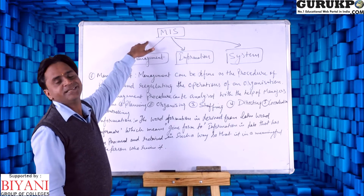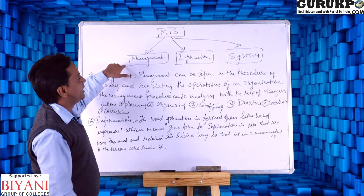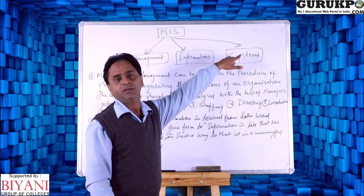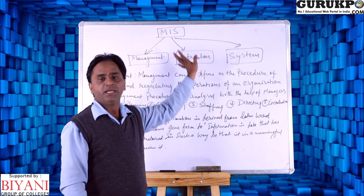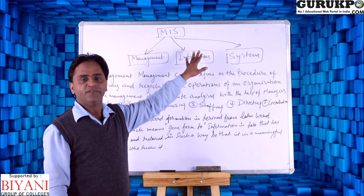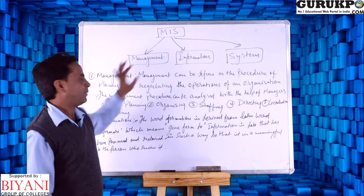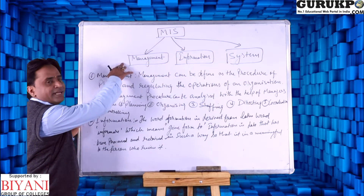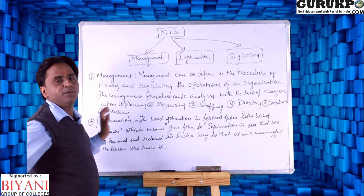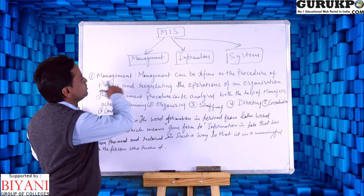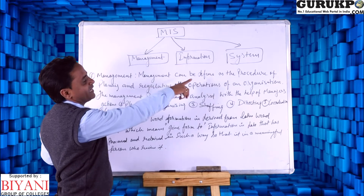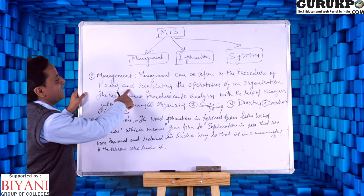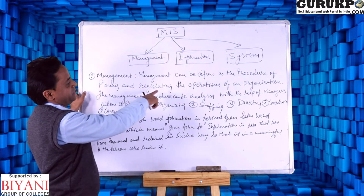MIS can be divided into three parts: management, information, and system — three equal and different parts. We will discuss first of all management. Management can be defined as the process of planning and regulation.